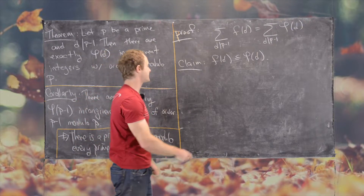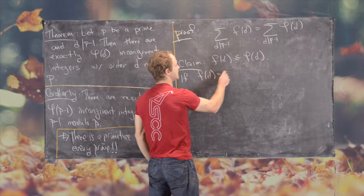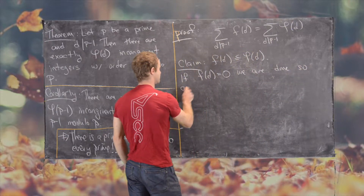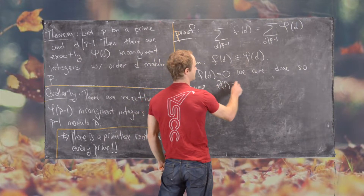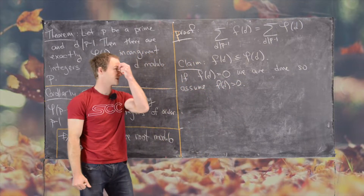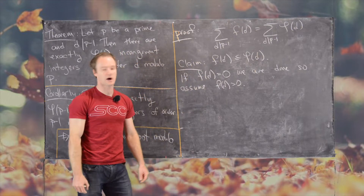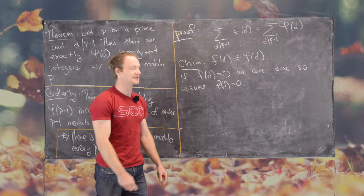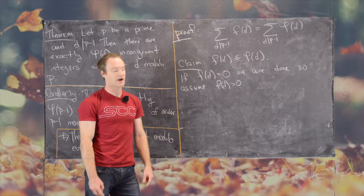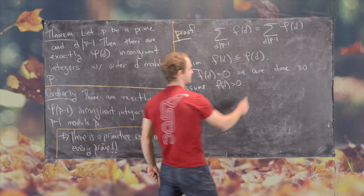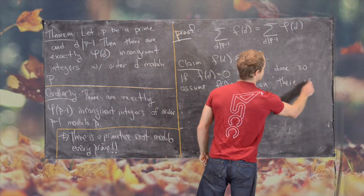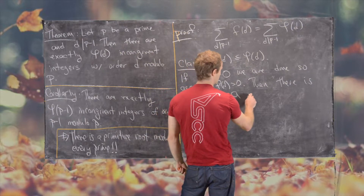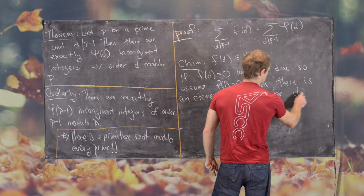If F(D) equals zero, we are done since φ(D) is always positive, so zero is trivially less than or equal to φ(D). So we assume F(D) is greater than zero. Since F(D) is positive, there exists an element A of order D, and we can use it to find all elements of order D.